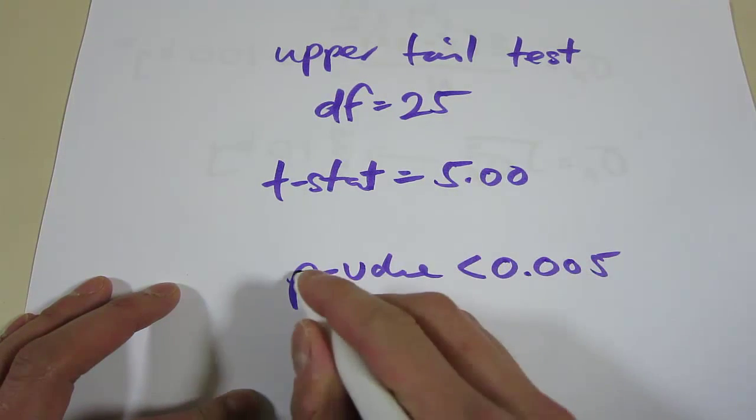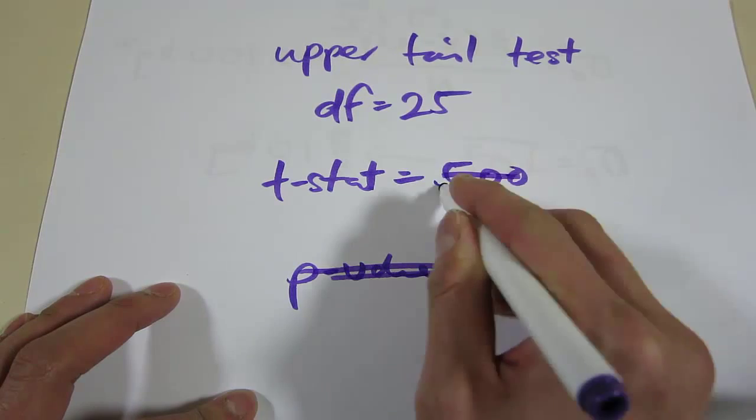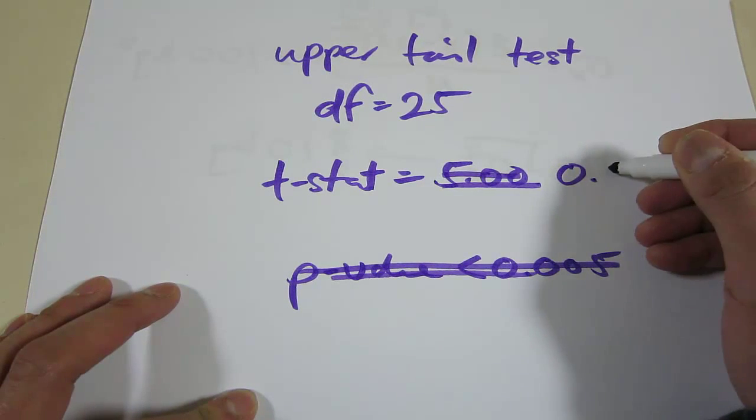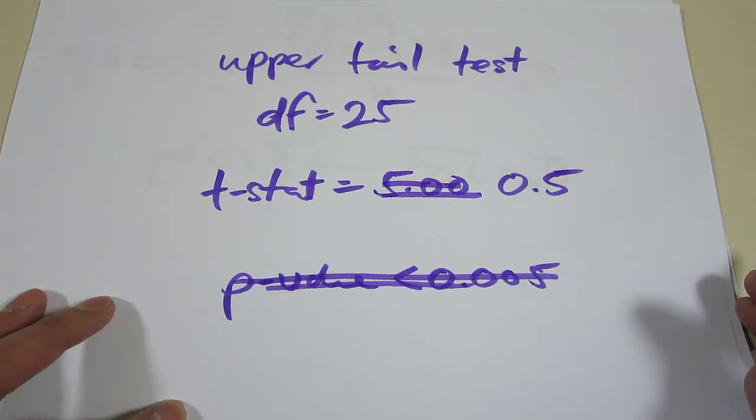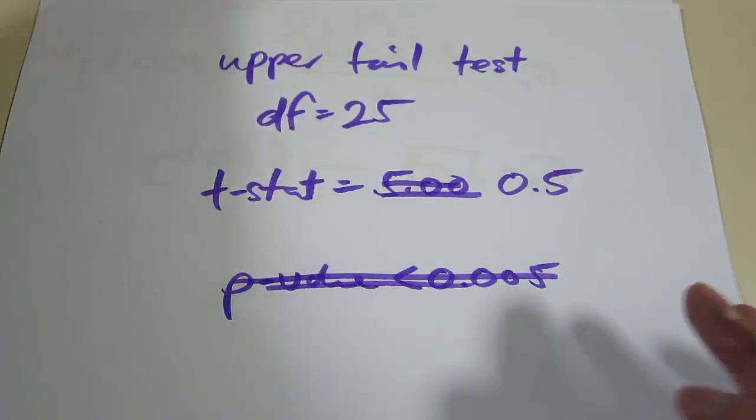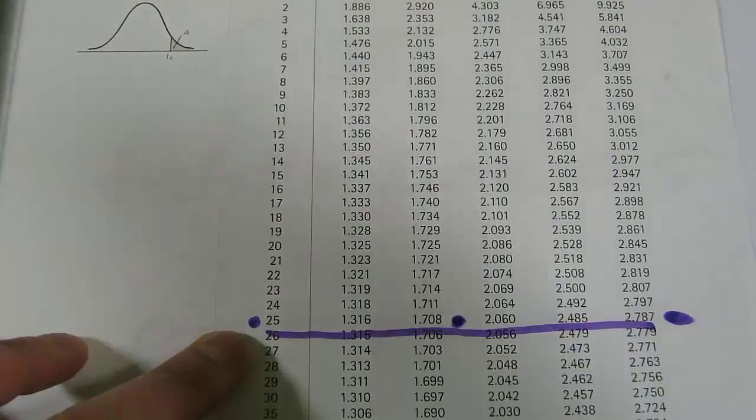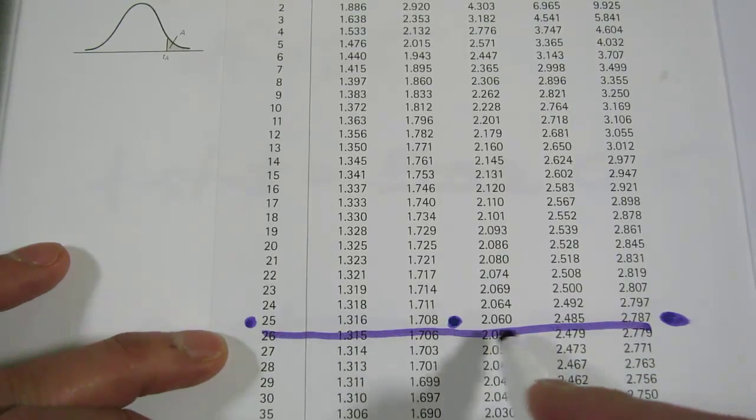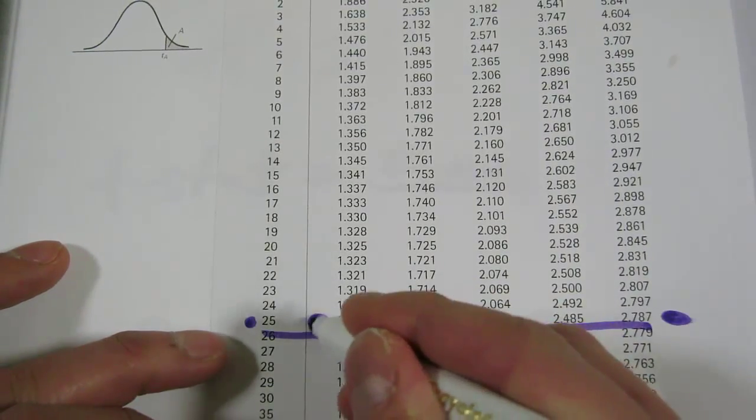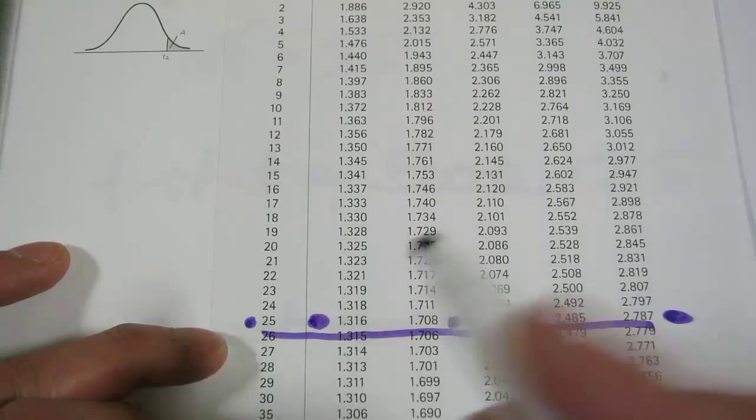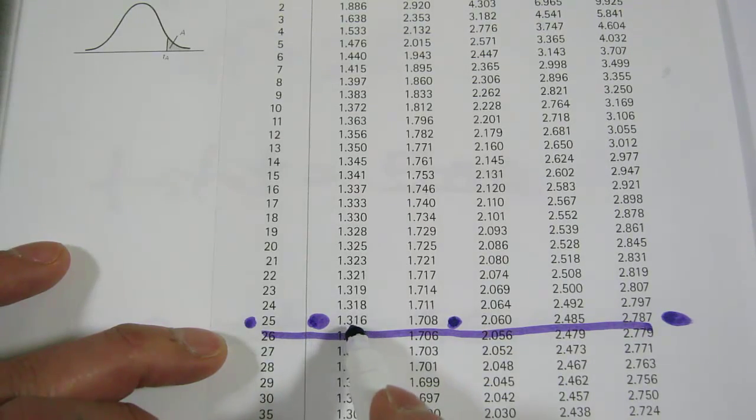Let's try another example. Let's suppose our t-statistic is crazily small, equals to 0.5. And again, we look here, what do we find? 0.5, well, 0.5 lies here, to the left of the first column, because it's smaller than 1.316.